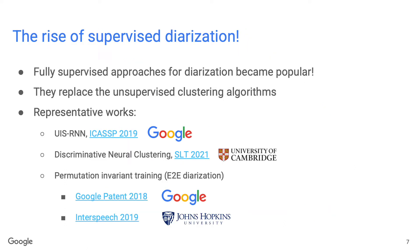In recent years, there is a rising interest in supervised diarization, which no longer requires unsupervised clustering algorithms. These supervised approaches easily outperform clustering-based approaches on many benchmarks. Some representative works include unbounded interleaved state RNN by Google, discriminative neural clustering by University of Cambridge, and permutation invariant training or end-to-end diarization proposed by both Google and Johns Hopkins University.